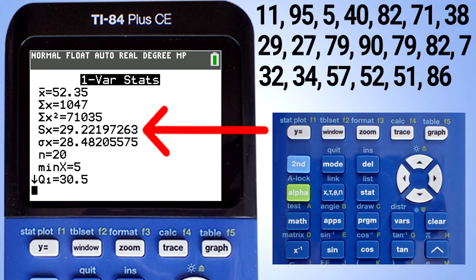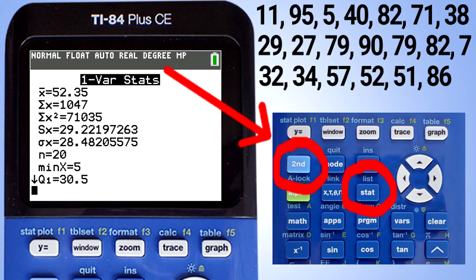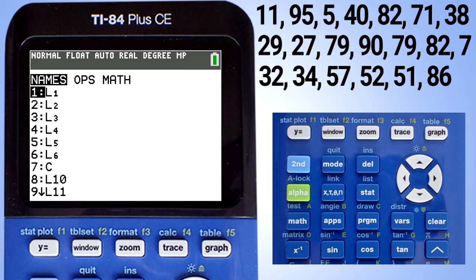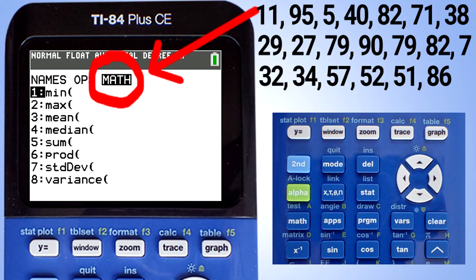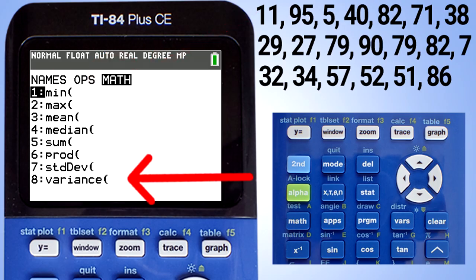So if you want the variance, take the 29.22197263 and square it. Or you can find the variance by pressing the second button and the list button. This window appears. Go to the math tab. Here we have the variance.